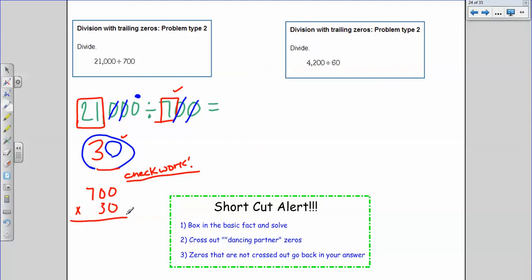I'm going to do 700 times 30. And again, now we can use our shortcut that we learn for multiplication, right? So I have seven times three is 21. And how many zeros do I have? I have one, two, three zeros. So how many zeros should I put in my final answer? You got it. Three. One, two, three.